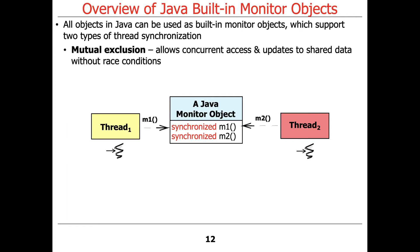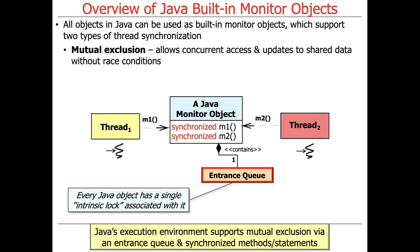You can have mutual exclusion, which allows concurrent access and updates to shared data without incurring race conditions. Every Java object has a single intrinsic lock associated with it — sometimes called the monitor lock when discussing the monitor object pattern. The intrinsic lock also has what's known as an entrance queue, which keeps track of threads waiting to get access to the critical section. Java's execution environment — the JVM, Android runtime, etc. — supports mutual exclusion via an entrance queue and synchronized methods and statements.